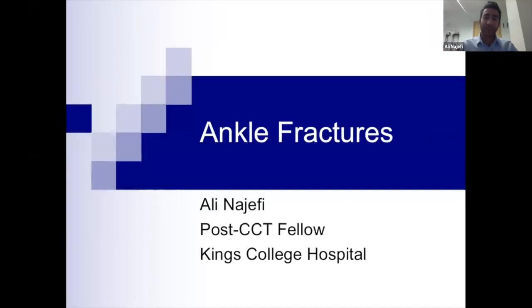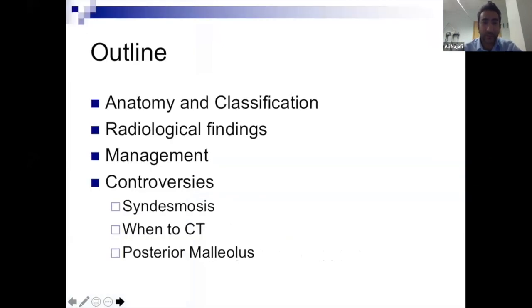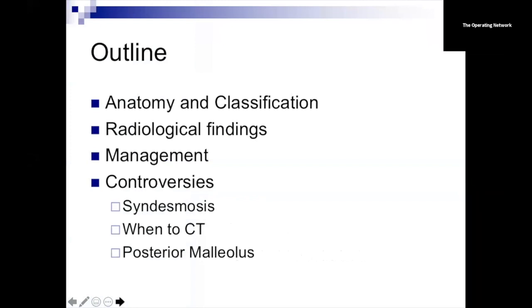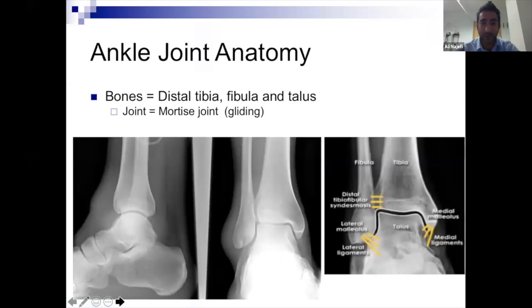Hi everyone. I'm going to talk about ankle fractures. We'll go through some of the basic principles: anatomy, classification, some of the X-ray findings, the management, and some of the controversies — things like the syndesmosis, when to get a CT, and the posterior malleolus, which are all areas of question marks in the trauma meeting. Starting with the anatomy.